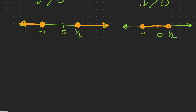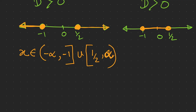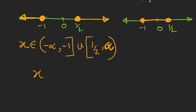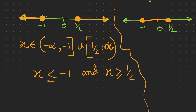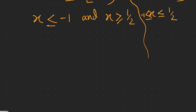For 2x² + x − 1 ≥ 0, the solution is x ∈ (−∞, −1] ∪ [1/2, +∞). We use square brackets because x₁ = −1 and x₂ = 1/2 are included this time. We can also write x ≤ −1 or x ≥ 1/2. For 2x² + x − 1 ≤ 0, the solution is x ∈ [−1, 1/2], and we write −1 ≤ x ≤ 1/2.